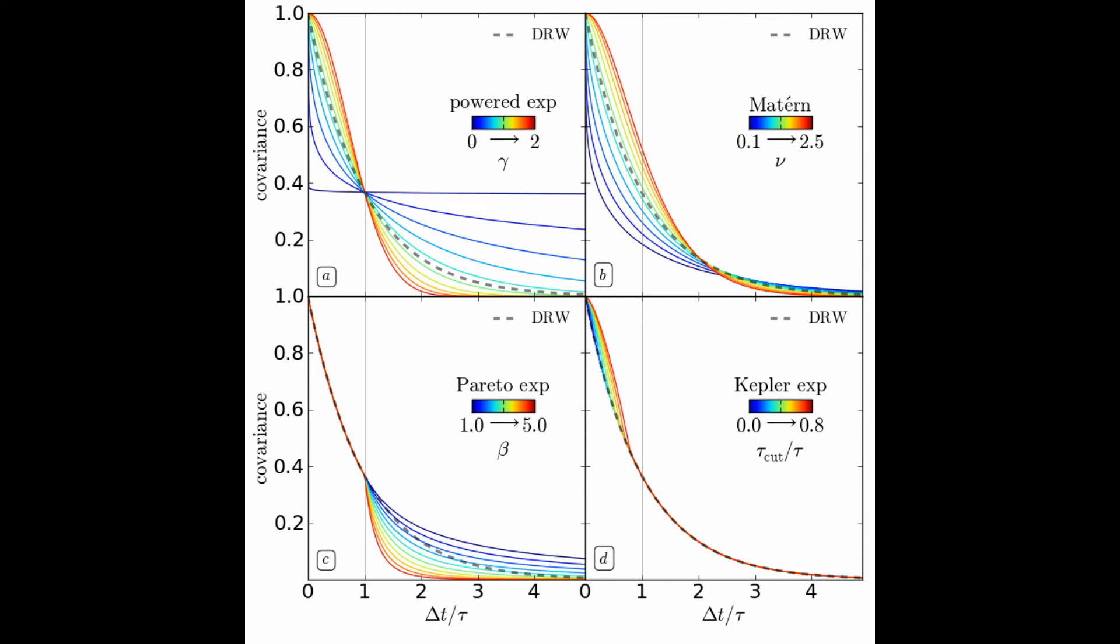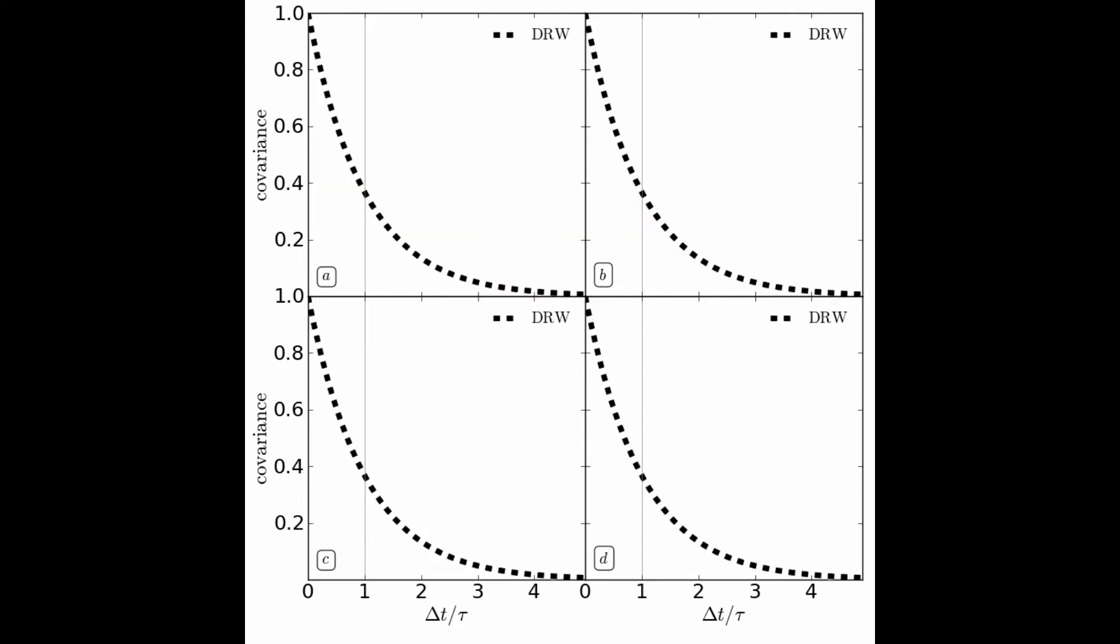In each panel, the x-axis is a time lag in units of the characteristic timescale tau, and the y-axis is a covariance normalized to unity at zero lag. The DRW covariance function is plotted in each panel as a black dashed curve.